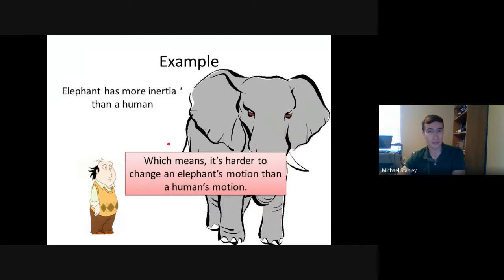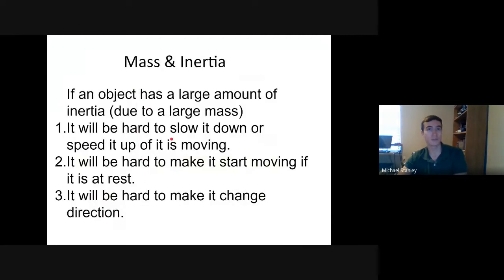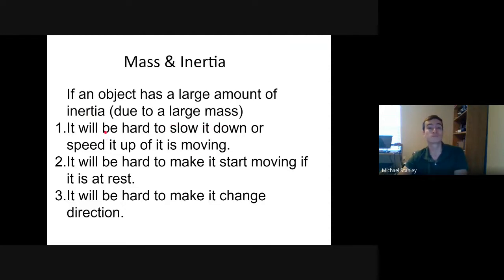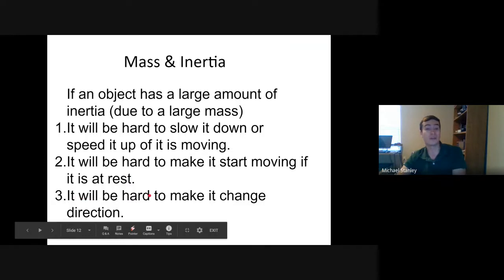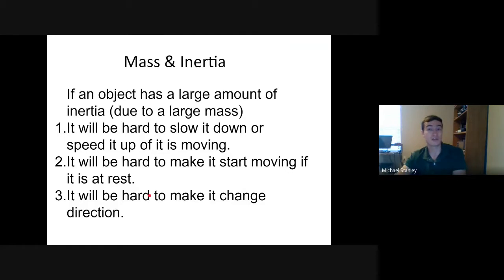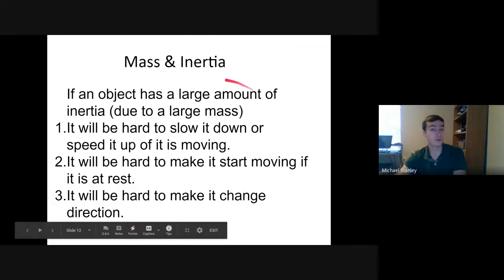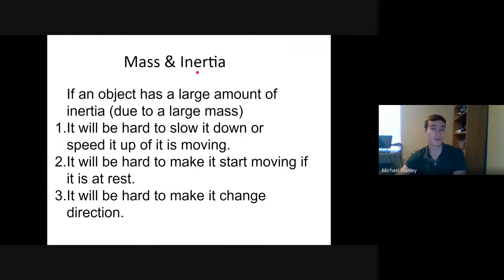If an object has a large amount of inertia: if it's moving, it'll be hard to slow down or speed up; if it's at rest, it'll be hard to make it start moving; and if it's moving, it'll be hard to make it change direction. The more mass, the larger the inertia, and the more difficult it is to change the direction or movement of that object.